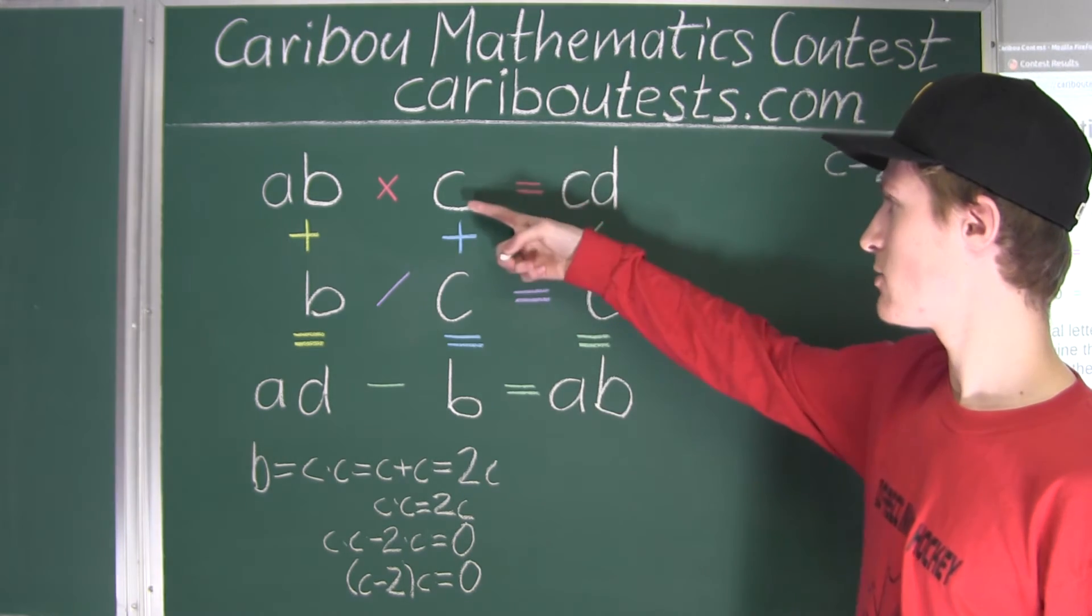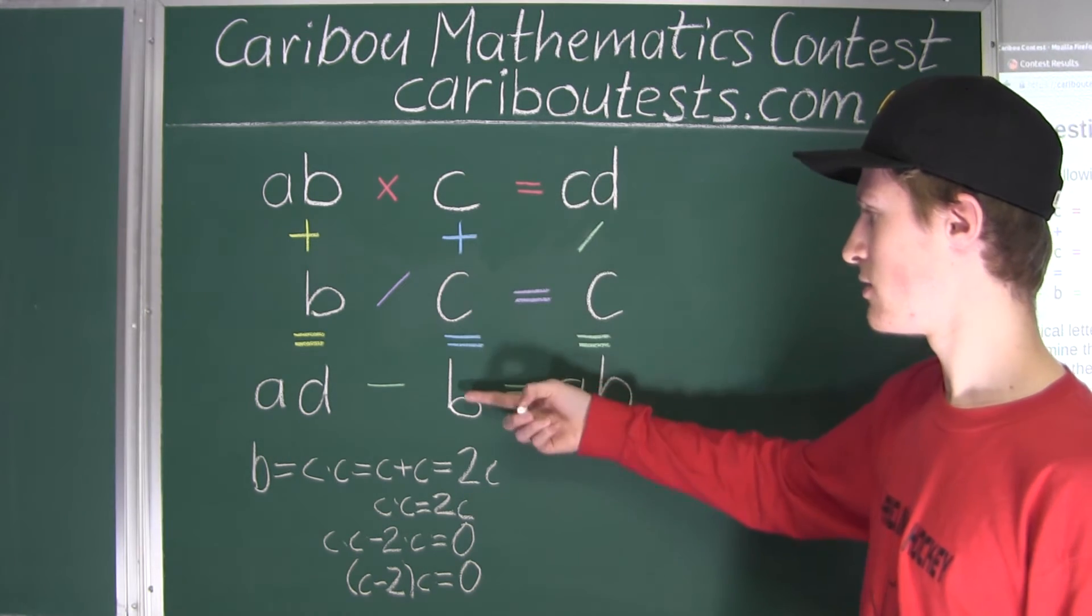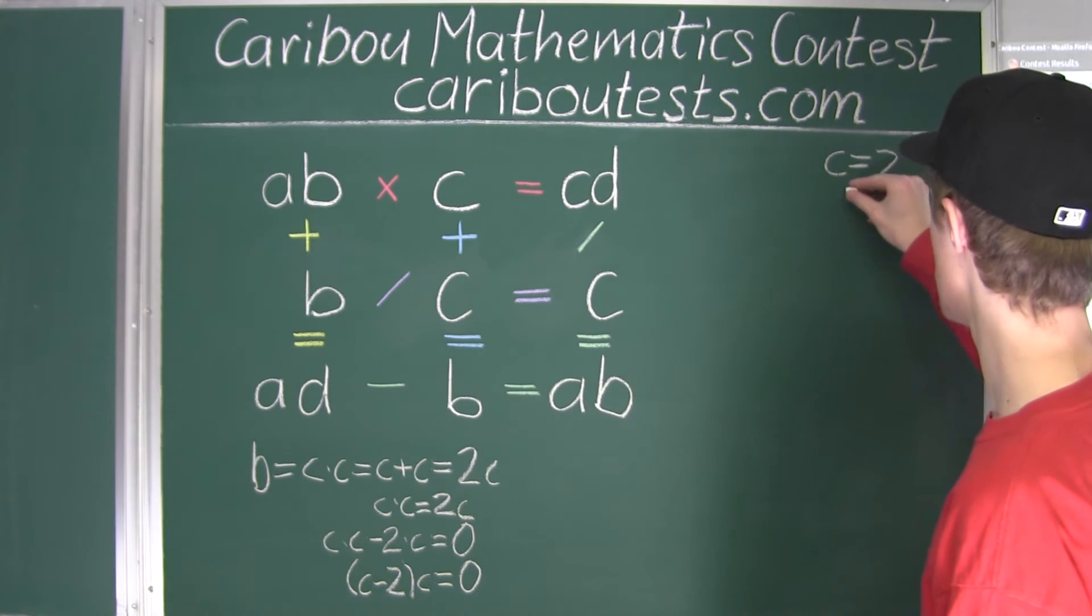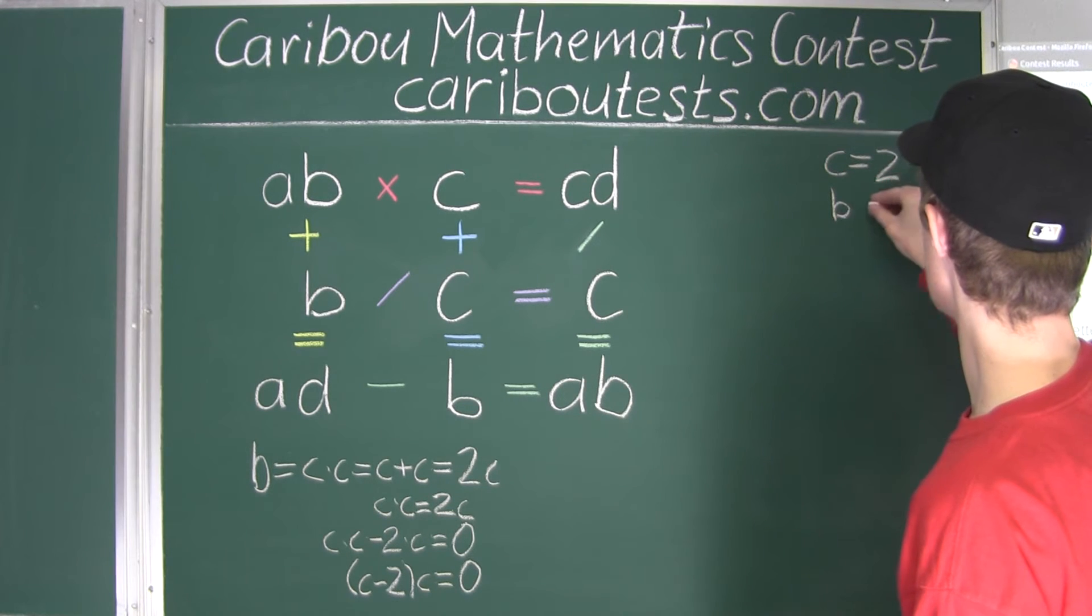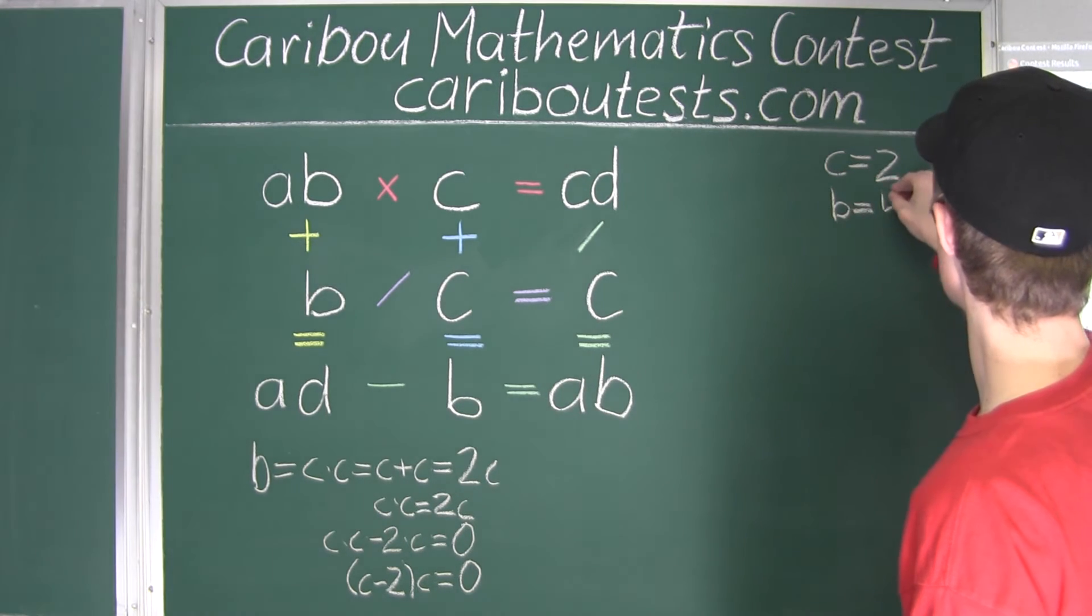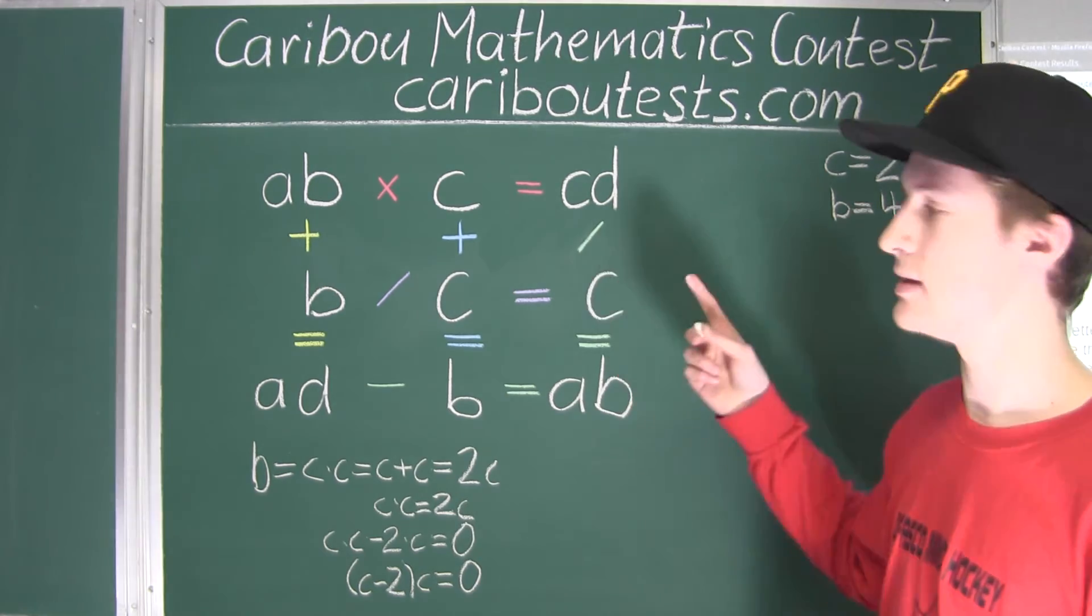Okay. Well, here we have 2 plus 2 is equal to 4. So, B must be equal to 4. Okay. Now, we know B and C, so we want to find out A and D.